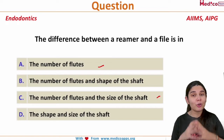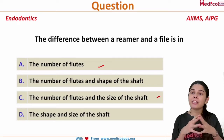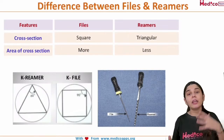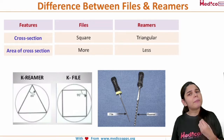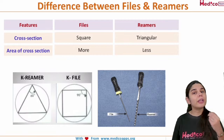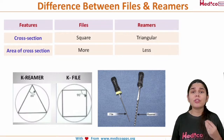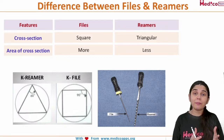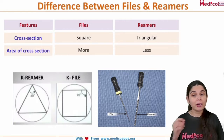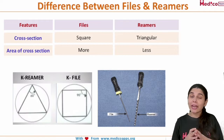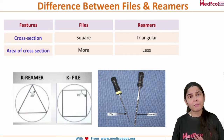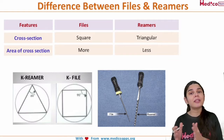The key point here is we are going to discuss the difference between a reamer and a file. Basically, what do you think of when I say files and reamers? They are surgical instruments used during root canal treatment. They are dental instruments used for cleaning and shaping of the root canal. To identify which is a file and which is a reamer, you need to know their differences.